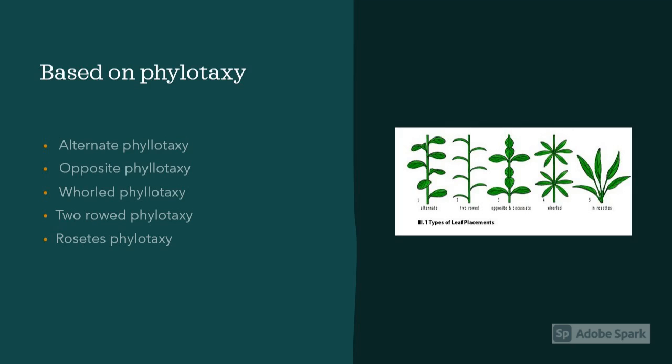Leaves can also be classified based on their phyllotaxis. Phyllotaxis means the arrangement of leaves. The different types of arrangements are alternate, opposite, whorled, two-rowed, and rosette phyllotaxis, which are the types we use to classify leaves.